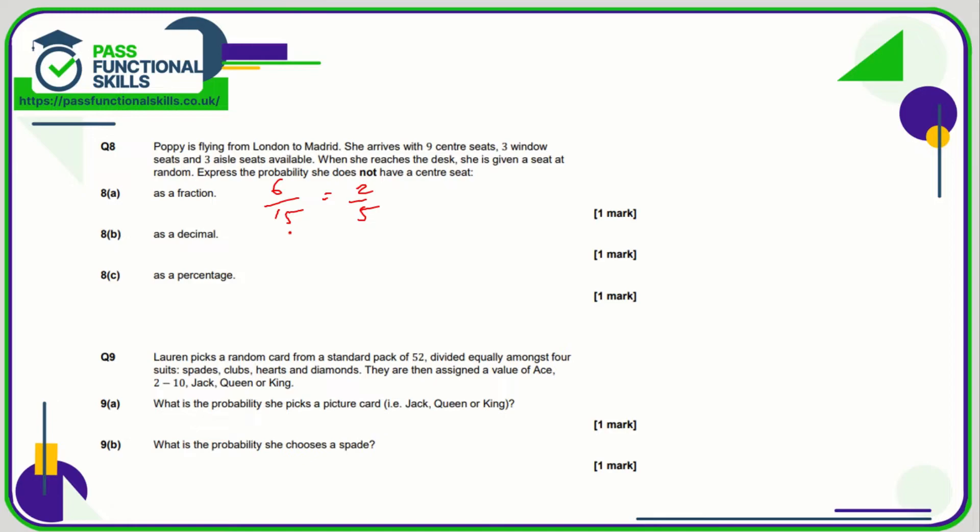2 fifths as a decimal—certainly 2 fifths is easier to convert into a decimal than 6 fifteenths. So I think the only way to go from here to a decimal, although you can use a calculator, is 6 divided by 15, which is the same as 2 divided by 5. But maybe you know that 1 fifth is 0.2, so 2 fifths is 0.4. And to turn the decimal into a percentage, multiply by 100, so that is 40 percent.